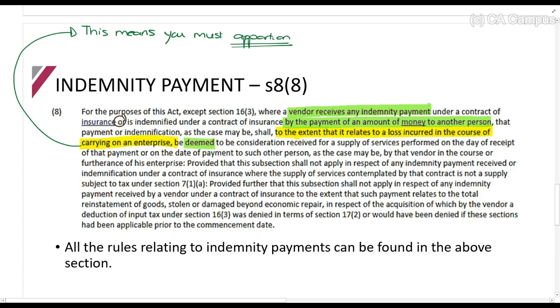be deemed to be consideration received for a supply of services. So you can see, it's consideration for a supply of services. That is why we must raise output tax. Performed on the day of receipt of that payment. So day of receipt - this is the timing rule. Or on the date of payment to such other person, as the case may be, by that vendor in the course of the furtherance of his enterprise.